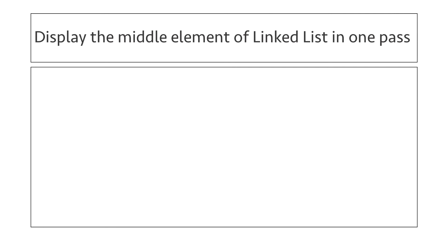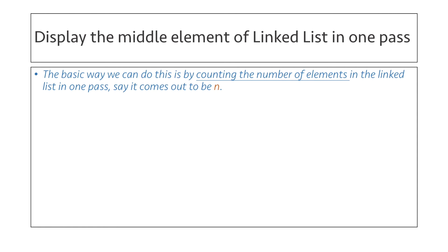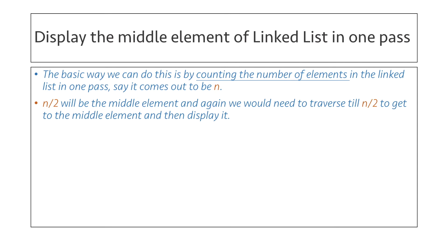Hello everyone, today we'll learn how to display the middle element of a linked list. The basic way we can do this is by counting the number of elements in the linked list in one pass, say it comes out to be n. Thus n/2 will be the middle element, and again we need to traverse till n/2 to get to the middle element and then display it.